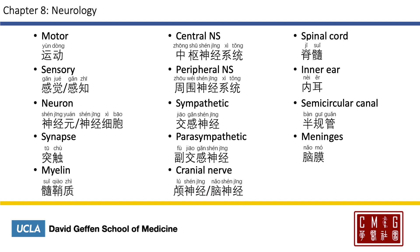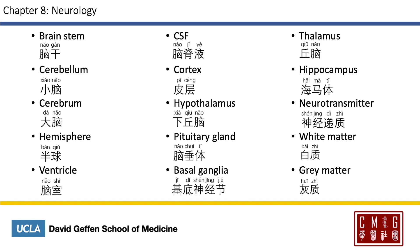Whenever you see the prefix "para," you can pretty much guarantee that there is a 副 in the translation as well. Cranial nerve is 颅神经 or 脑神经. Spinal cord is 脊髓. Inner ear is 内耳. Semicircular canal is 半规管. Meninges is 脑膜. Brain stem is 脑干. The cerebellum and cerebrum are 小脑 and 大脑. Hemisphere is 半球. And the ventricle is 脑室.